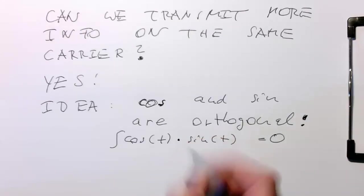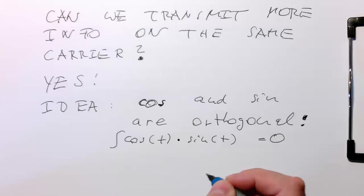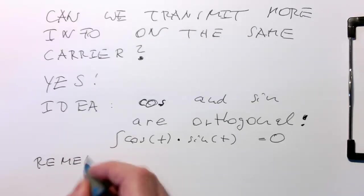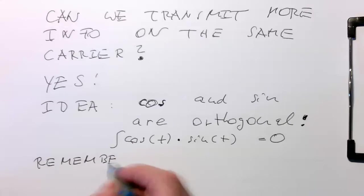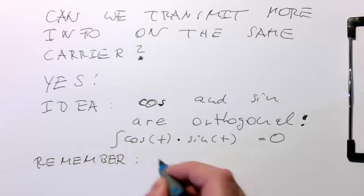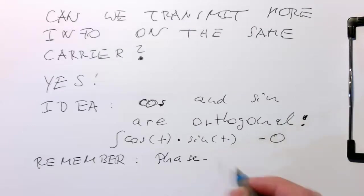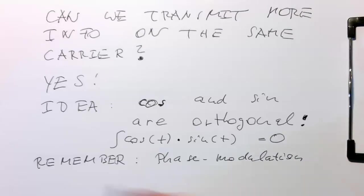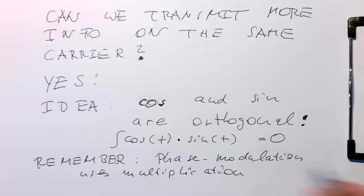And so now remember what we do in our transmitter and receiver. So remember, phase modulation uses multiplication of cosine waves.